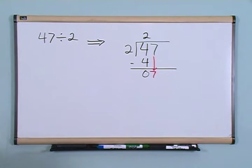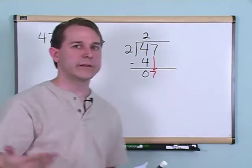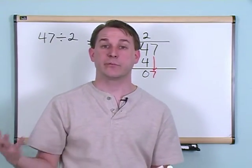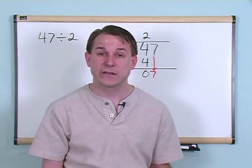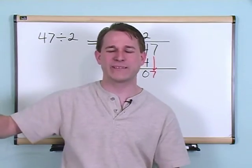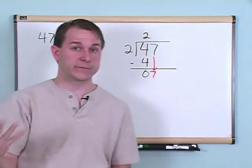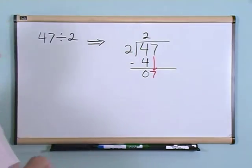Now the thing you need to ask yourself is how many times can 2 go into 7? In other words, 2 times what gives you 7? 2 times 1 is 2, 2 times 2 is 4, 2 times 3 is 6, and 2 times 4 is 8. Well, that's too many. You can't do 2 times 4 because that'd be 8 and that'd be too many. You're looking for something close to 7, so 2 times 3 is going to give you 6. That's as close as you can get.